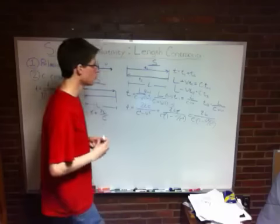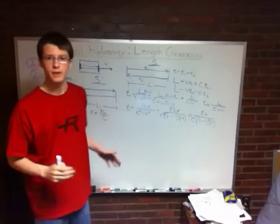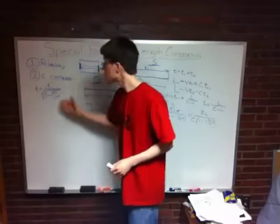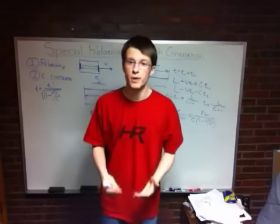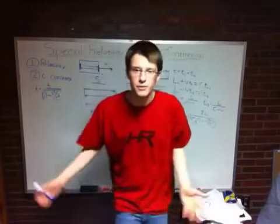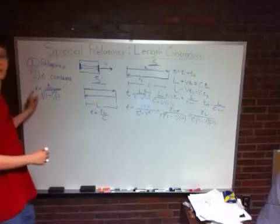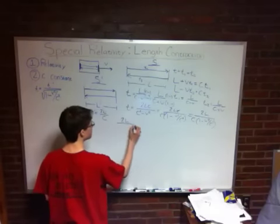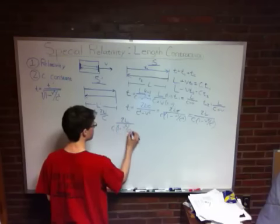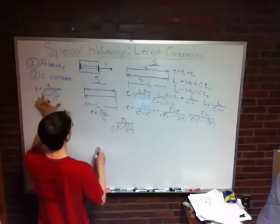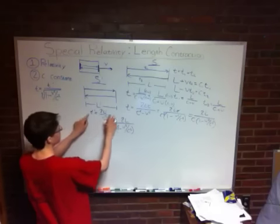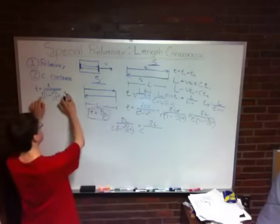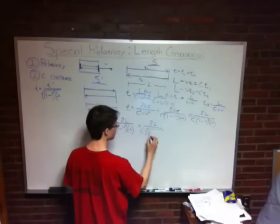Now we want to relate L to L-prime across the two frames of reference, and this expression doesn't have any L-primes in it. So we use the time dilation equation: T equals T-prime divided by the square root of 1 minus V²/C². We know that T-prime equals 2L-prime over C, so substituting in, we have 2L/(C·(1 − V²/C²)) equals 2L-prime divided by (C times the square root of 1 − V²/C²).